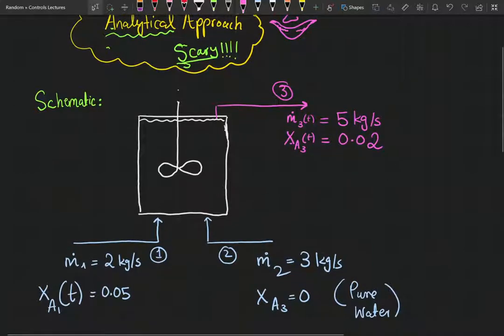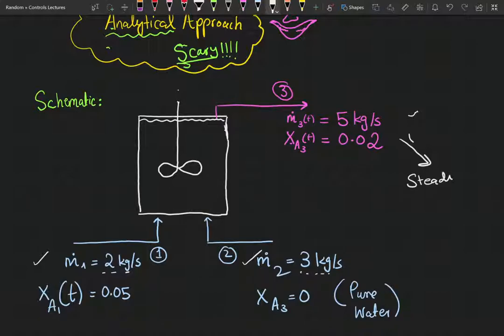What do we need to model? Our input variables, the inlet flow rates: m1 is 2 kg/s and m2 is 3 kg/s. These are our steady state values of our output variable, steady state output/downstream variables.